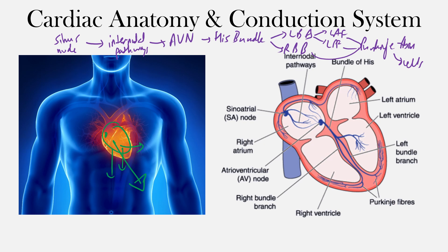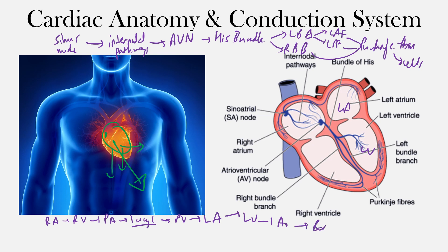For the anatomy review: blood goes from the right atrium to the right ventricle, to the pulmonary artery, to the lungs to get oxygenated, then to the pulmonary veins and the left atrium, then the left ventricle, then out the aorta to the body where muscle cells take up the oxygenated blood. It returns to the right side of the heart through the inferior or superior vena cava, into the right atrium, and the cycle starts over.